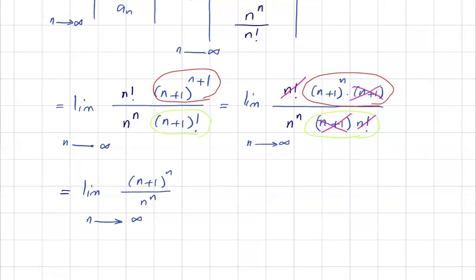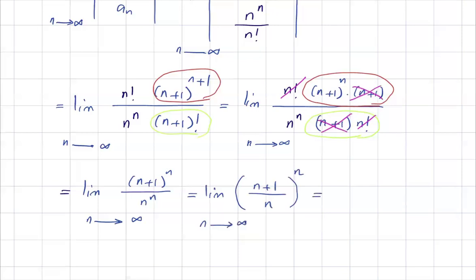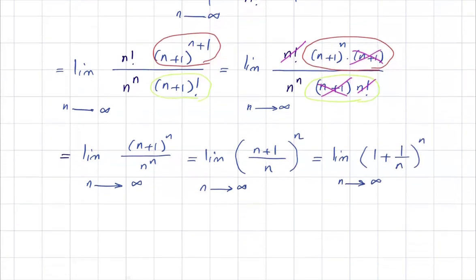Taking the common power, this becomes the limit of (n+1) divided by n, all to the power n, as n goes to infinity. This can be rewritten as the limit of 1 plus 1 over n, all raised to the power n, as n goes to infinity. As you remember, this limit is nothing but e, the Napier number.